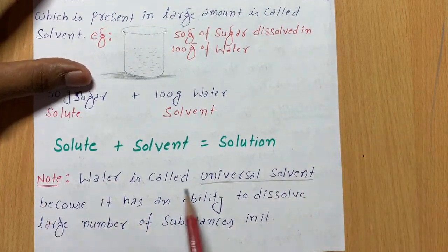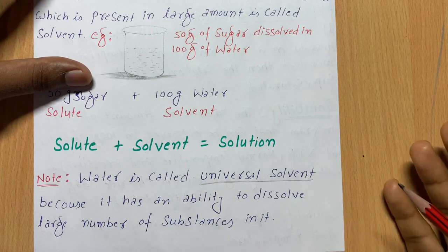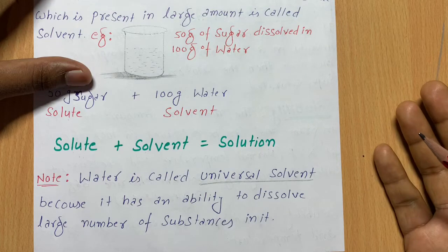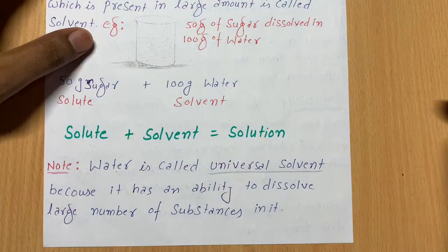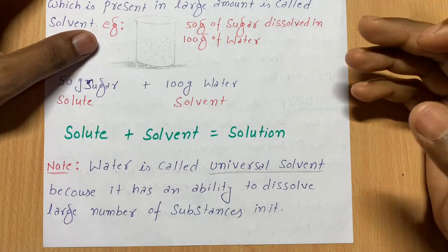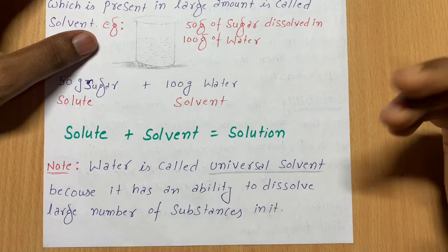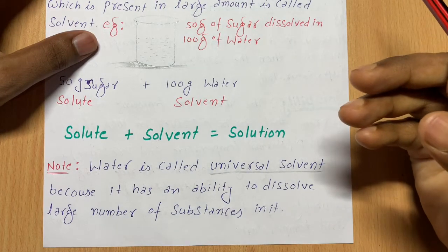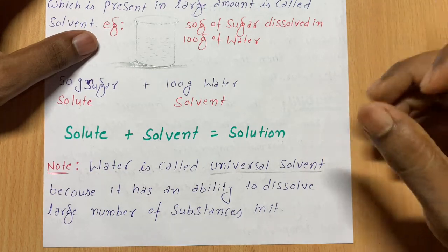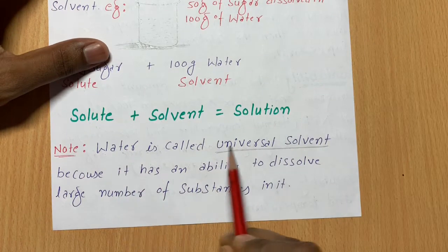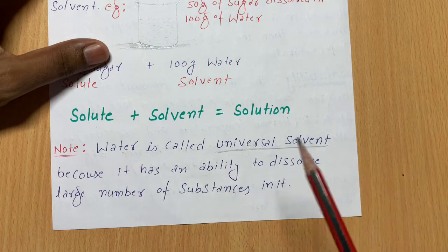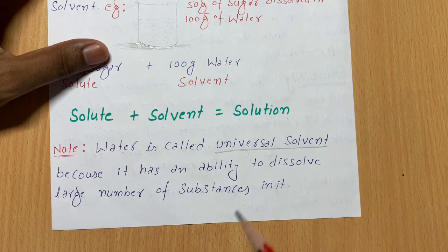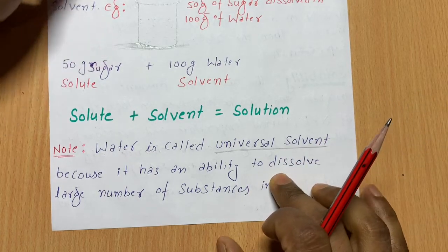An important note: water is called the universal solvent because it has the ability to dissolve a large number of substances in it. Water can dissolve different types of substances, which is why it is given the title of universal solvent.